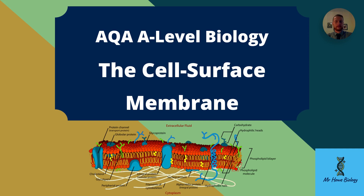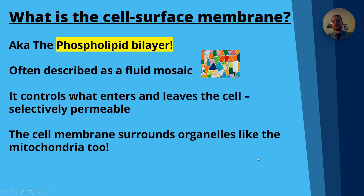Don't worry about remembering all of that straight off the bat — we're going to look at it in more detail in a moment. So what is the cell surface membrane? It's the phospholipid bilayer. Phospholipid because it's made up of phospholipids; bilayer meaning two layers. Think about a bicycle, which has got two wheels — a bilayer has two layers.